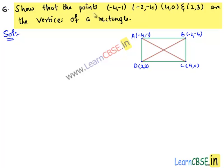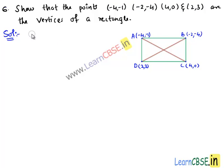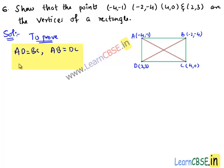In this question, we are given 4 points and we need to show that these 4 points are the vertices of a rectangle. We know that in a rectangle, opposite sides are equal and diagonals are also equal. So we need to prove that opposite sides AD equals BC, AB equals DC, and the diagonals AC equals BD.